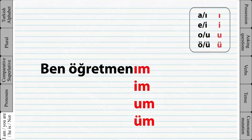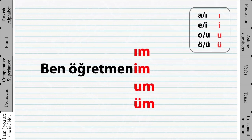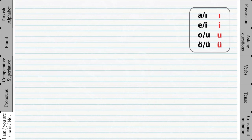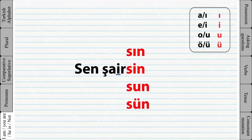Let's look at this example. Because the last vowel of this word is E, that's why we have to use the 'I am' ending. Let's look at another example. Again, because the last vowel of this word is I, that's why 'sin' is used.